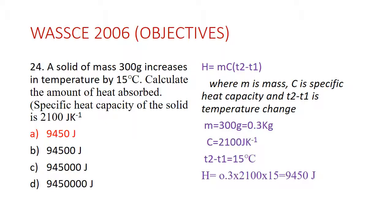Question 24: A solid of mass 300 grams increases in temperature by 15 degrees Celsius. Calculate the amount of heat absorbed, given that the specific heat capacity of the solid is 2100 joules per kilogram per kelvin. The answer is A. The formula for the amount of heat absorbed is: H = mcΔT, where H is the heat, m is the mass, c is the specific heat capacity, and ΔT is the temperature change.